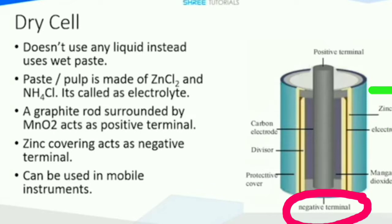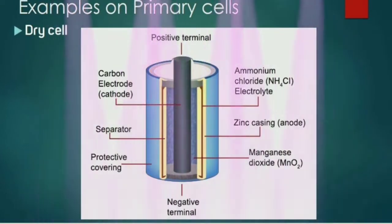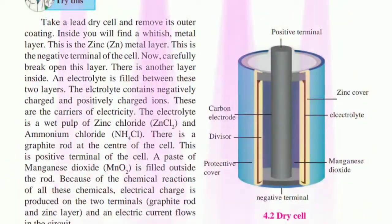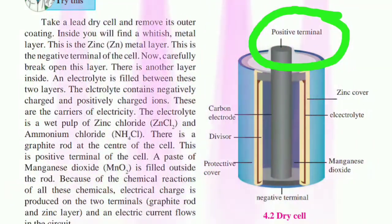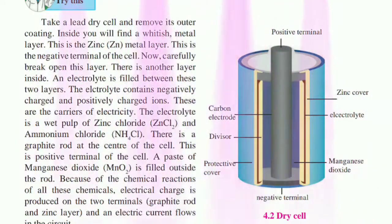Now carefully break open this layer. There is another layer inside. An electrolyte is filled between these two layers. The electrolyte contains negatively charged and positively charged ions. These are the carriers of electricity. The electrolyte is a wet pulp of zinc chloride that is ZnCl2 and ammonium chloride that is NH4Cl. There is a graphite rod at the center of the cell. This is positive terminal of the cell. A paste of magnesium dioxide is filled outside the rod.